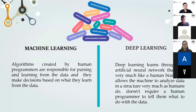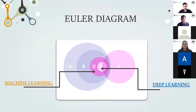Both machine learning and deep learning are subsets of artificial intelligence, but deep learning represents the next evolution of machine learning. In machine learning, algorithms are created by human programmers to parse and learn from data and make decisions based on what they learn. Whereas deep learning learns through an artificial neural network that acts like a human brain, allowing the machine to analyze data in a human-like structure without requiring a human programmer to direct it. Deep learning is the next evolution of machine learning, which is a subfield of AI, which itself is a subfield of computer science.